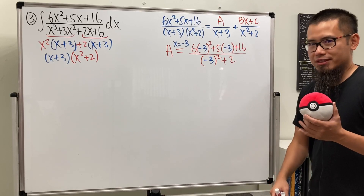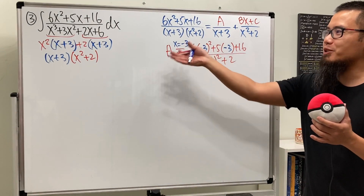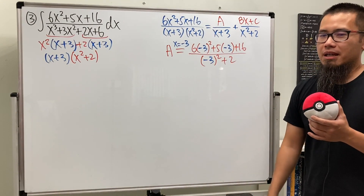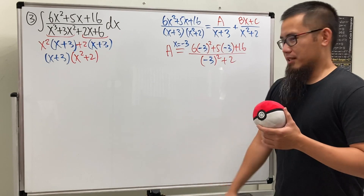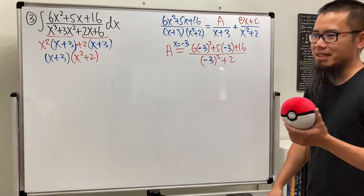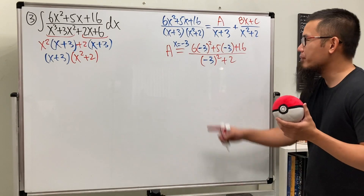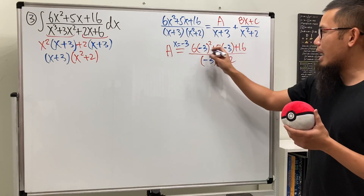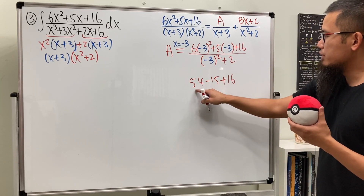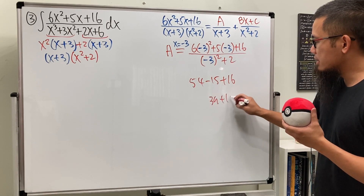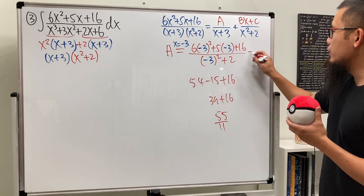Working it out: 6 times 9 is 54, minus 15 plus 16 — that's 39 plus 16 which is 55 — over 11, so A equals 5. The instructor notes that for exam problems the coefficients will be whole numbers, though in real-world applications that may not be the case.